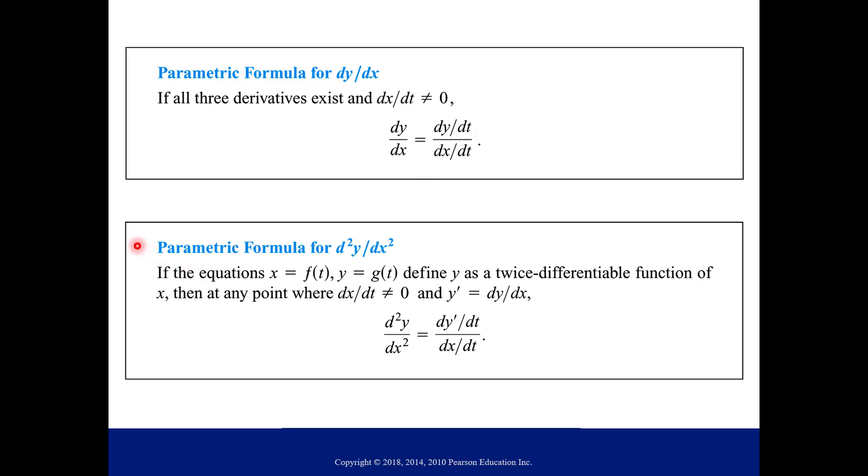Very similarly, you have a formula for the second derivative. So this is just our notation for second derivative. And this is saying the second derivative of y with respect to x. Now the fine print or background statement we have to have true is that x is a function of t, y is a function of t, and they define y as twice differentiable function of x.